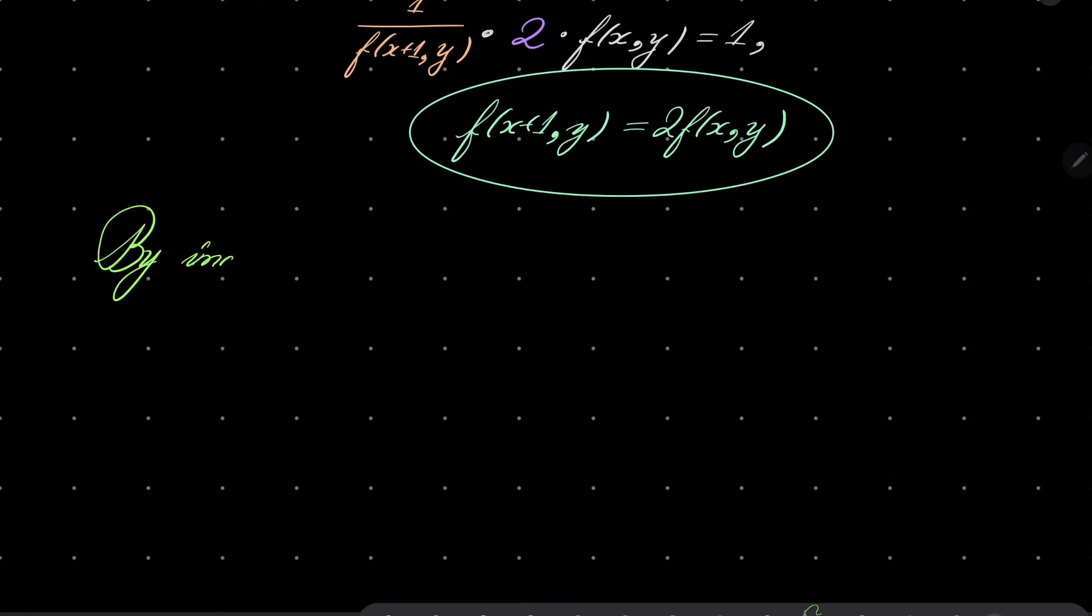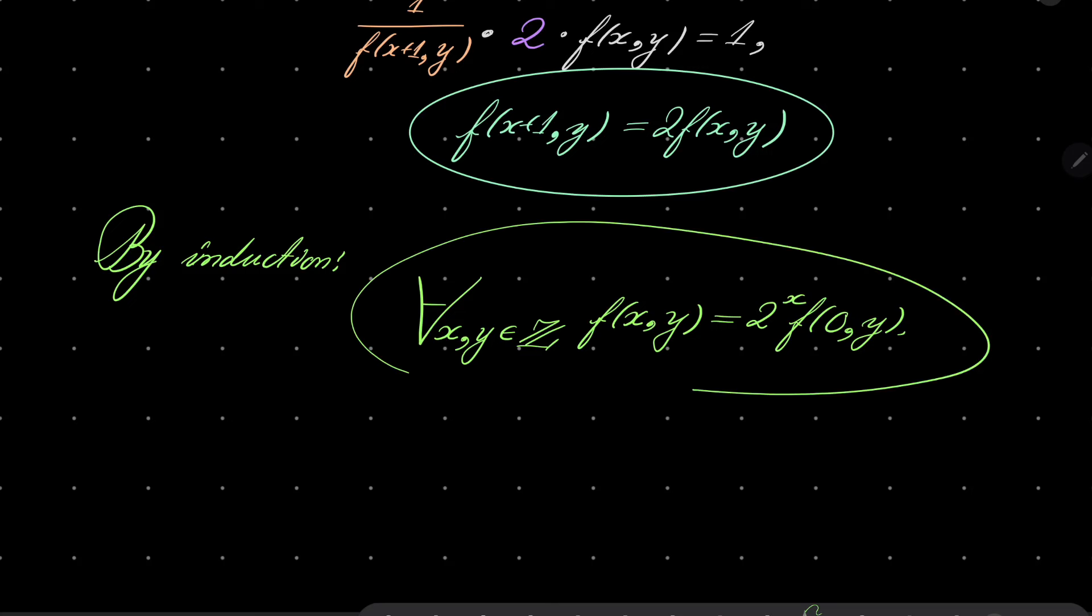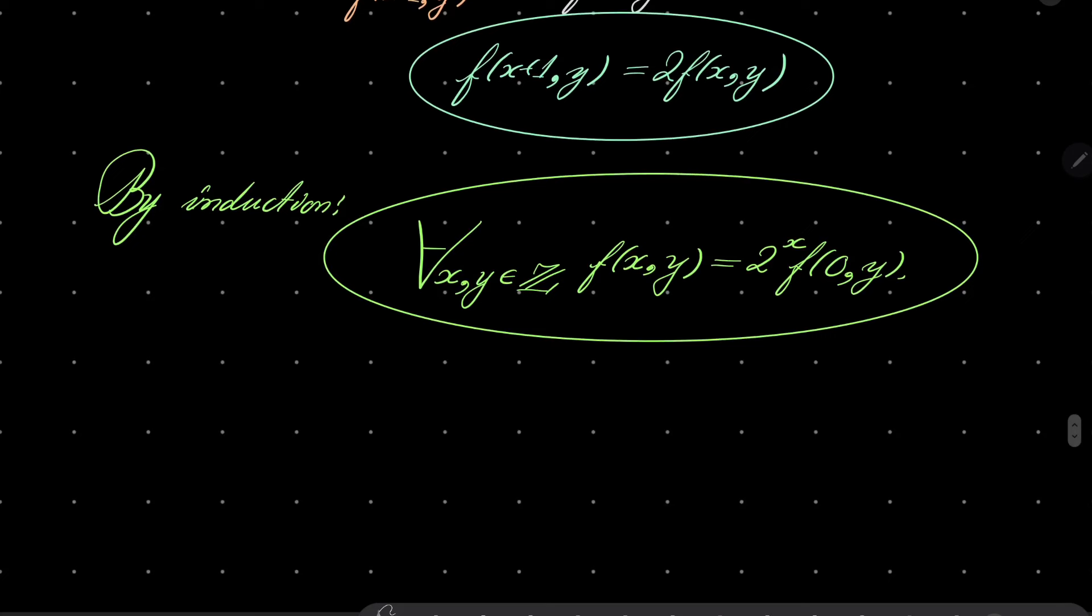By induction, for every two integers x and y, f(x,y) can be written as 2 to the power of x, f(0,y). Yes? Because every time I increase argument by 1, the value doubles. So it's exponential function. All right, but we don't know f(0,y). How can we find f(0,y)? Well,